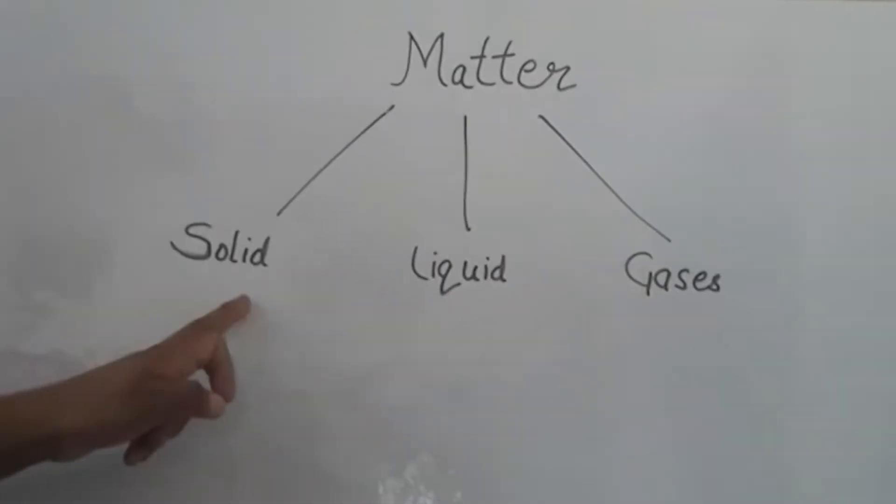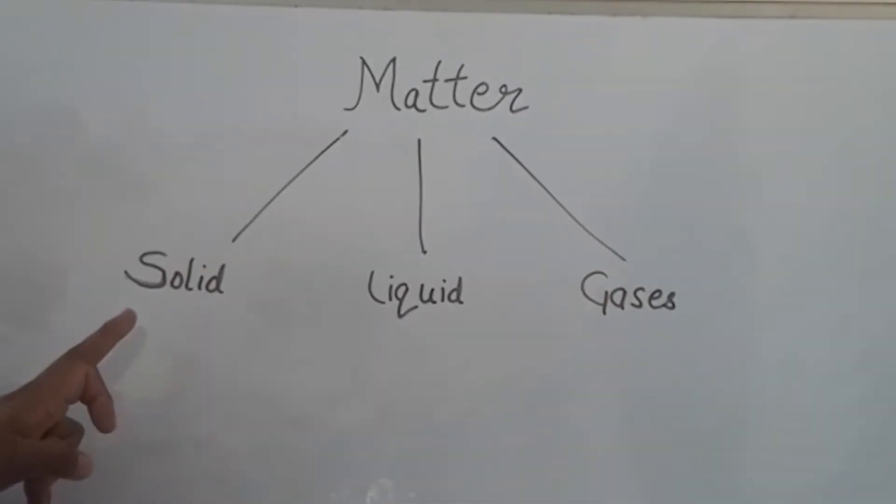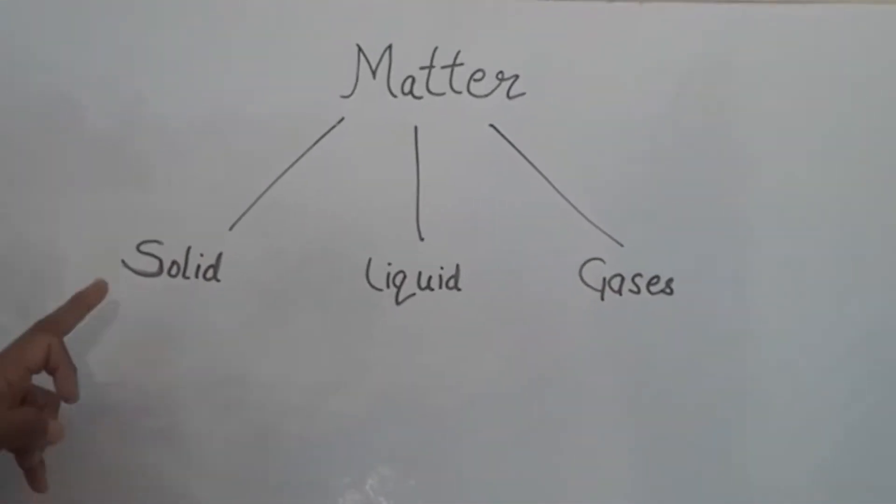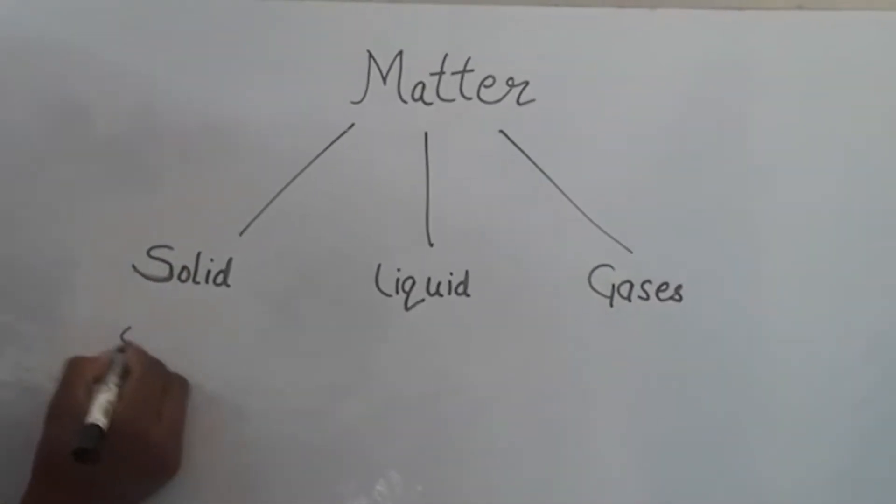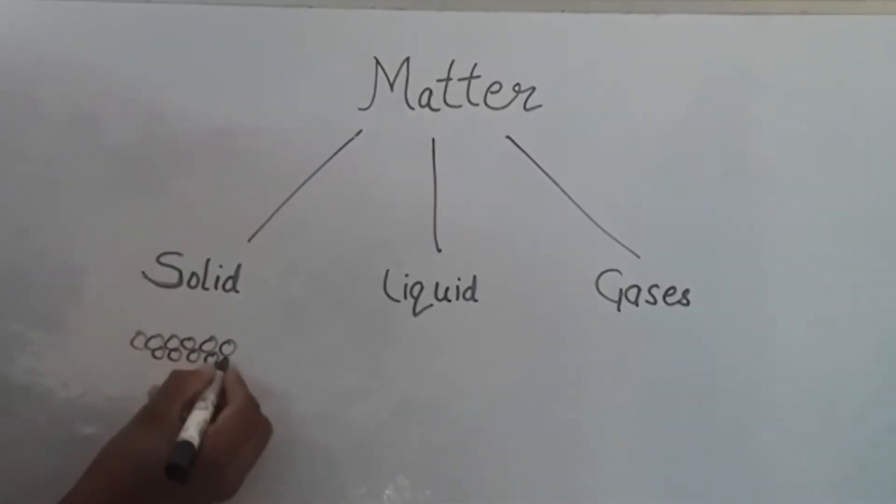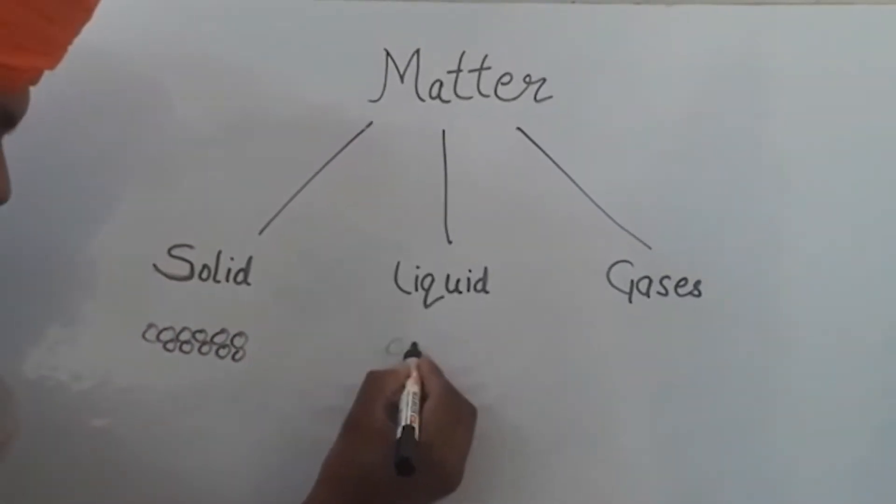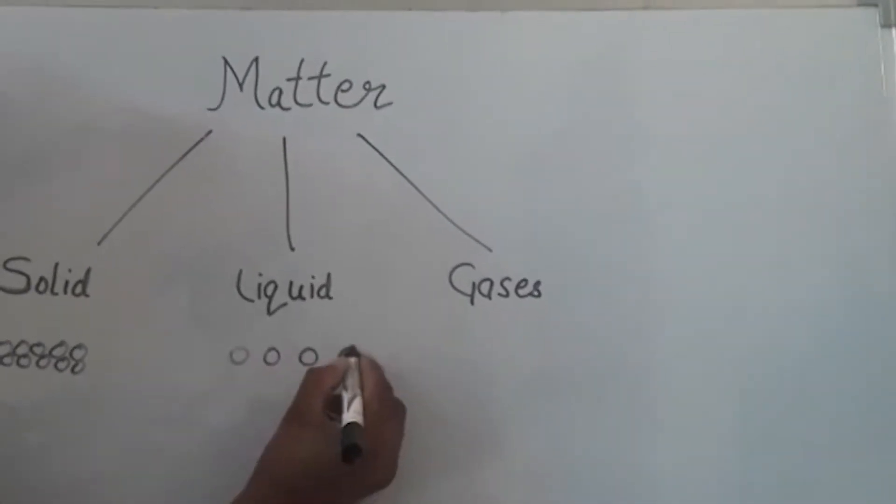Matter is of three kinds: solid, liquid, and gas. First of all, let us know about the properties. Molecules of solid are very tightly packed. Liquid molecules are little far, little far than the solid.